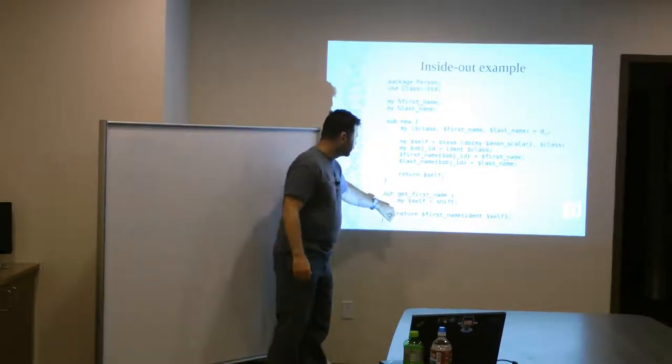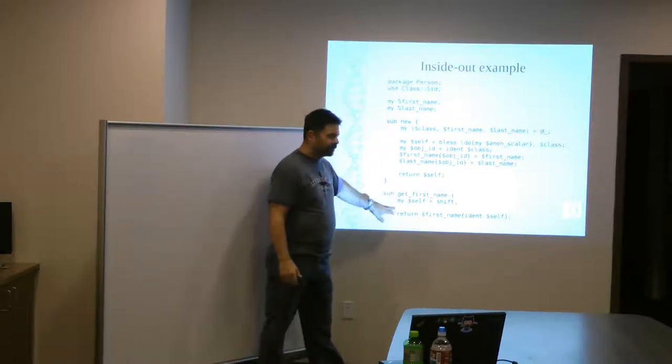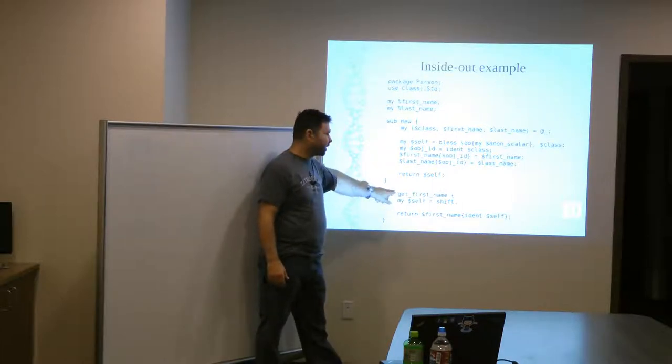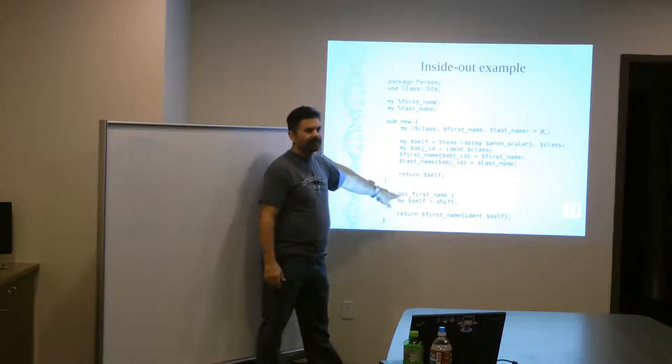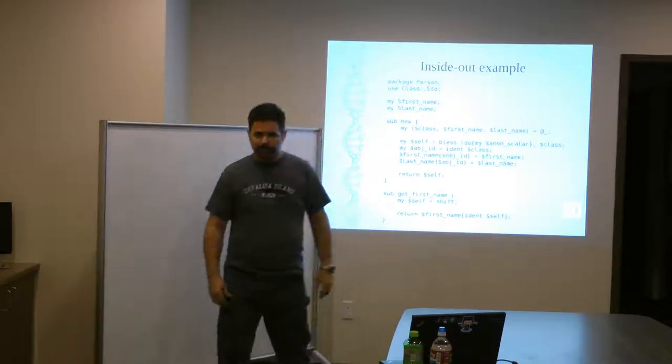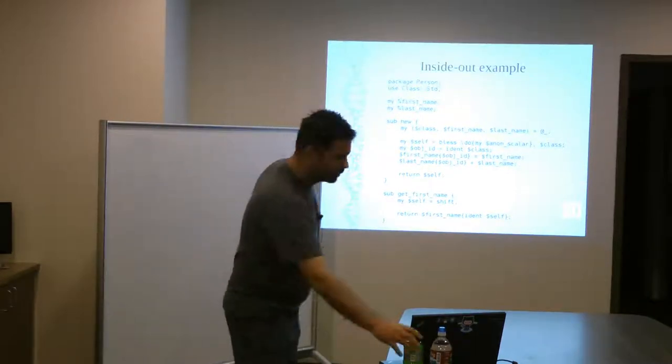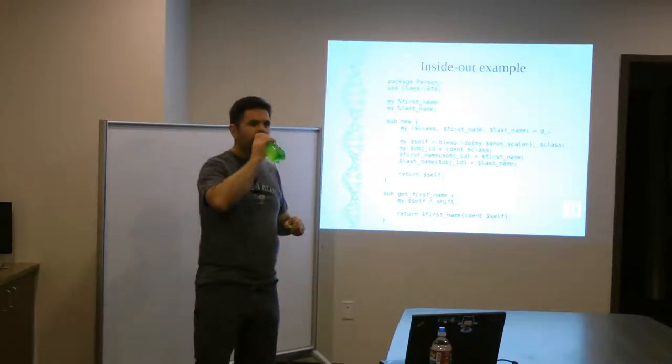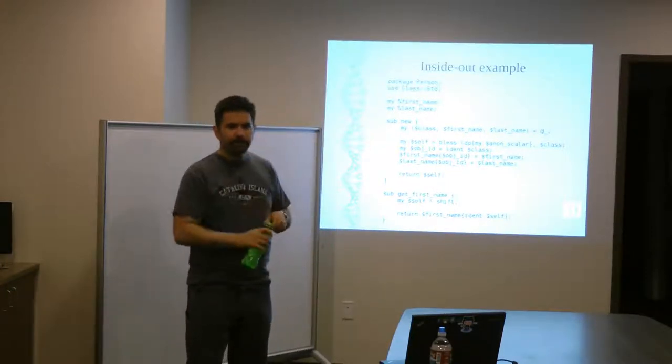And so, what ends up happening here is you have private data in this object because it's not accessible, except through the methods that you define, that you write, that allow you to get or set those values. And that's inside out. Any questions?